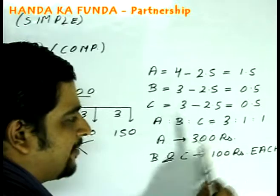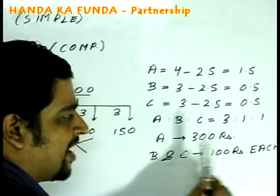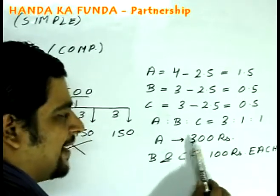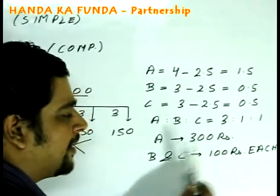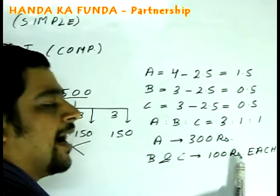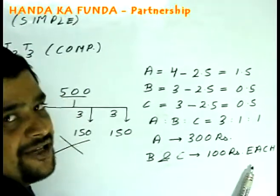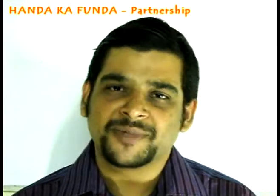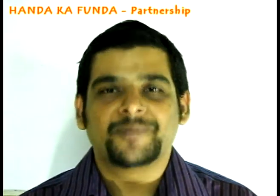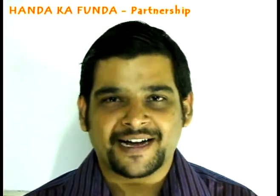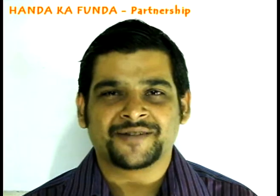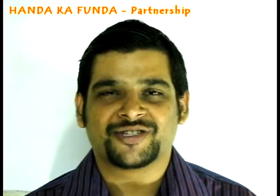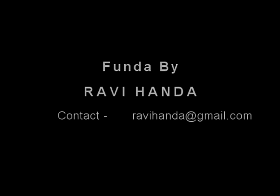This means A gets the lion's share — 300 rupees out of the 500 — and B and C each get 100 rupees. That wraps up the session on partnerships. Please stay tuned at Handa Ka Fanda to watch other videos on other chapters. Thank you.